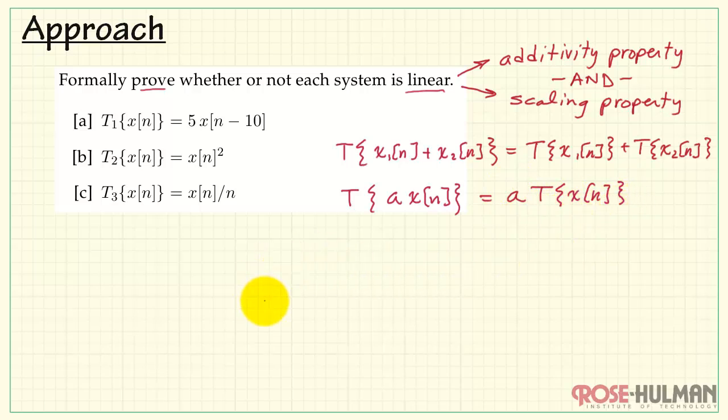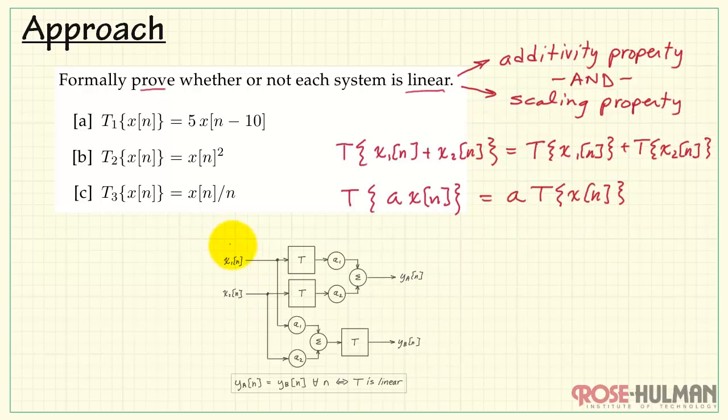We can combine both the additivity and scaling properties into this proof structure. Here we have the two instances of the system operating on two different signals, X1 and X2. Here we have the scaled versions that are being added together to form YA of N.